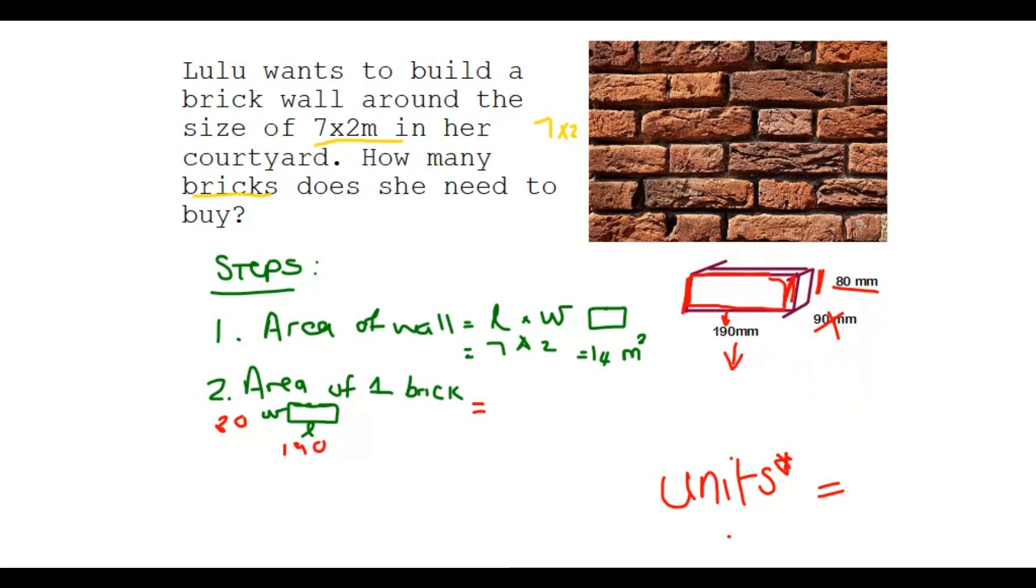So let's say 190 times 80 millimeters. And that gives you the answer of 15,200 millimeters. Remember, since it's area, I need to square that area.